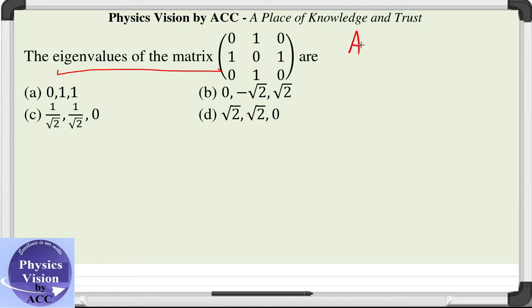As we know, the general method to calculate the eigenvalues is |A - λI| = 0. We need to solve the characteristic equation of lambda, and then we need to calculate the lambdas from this characteristic equation.